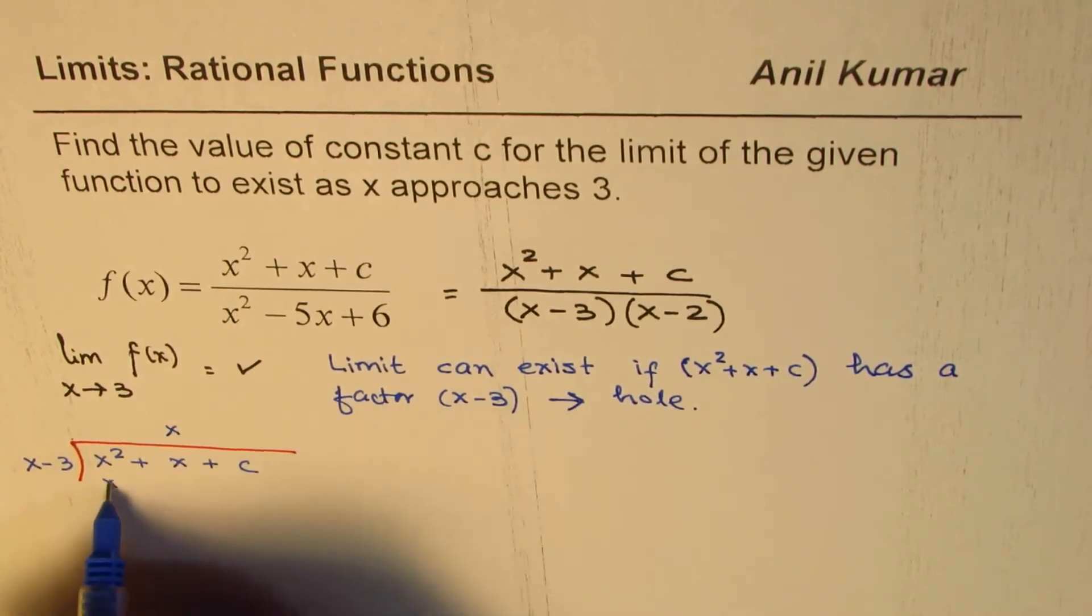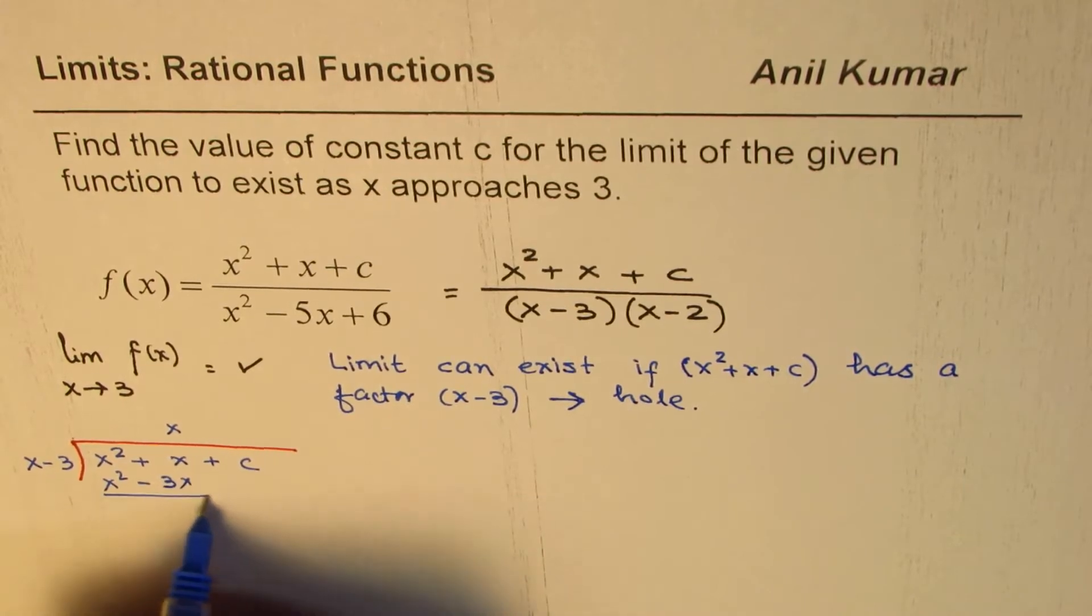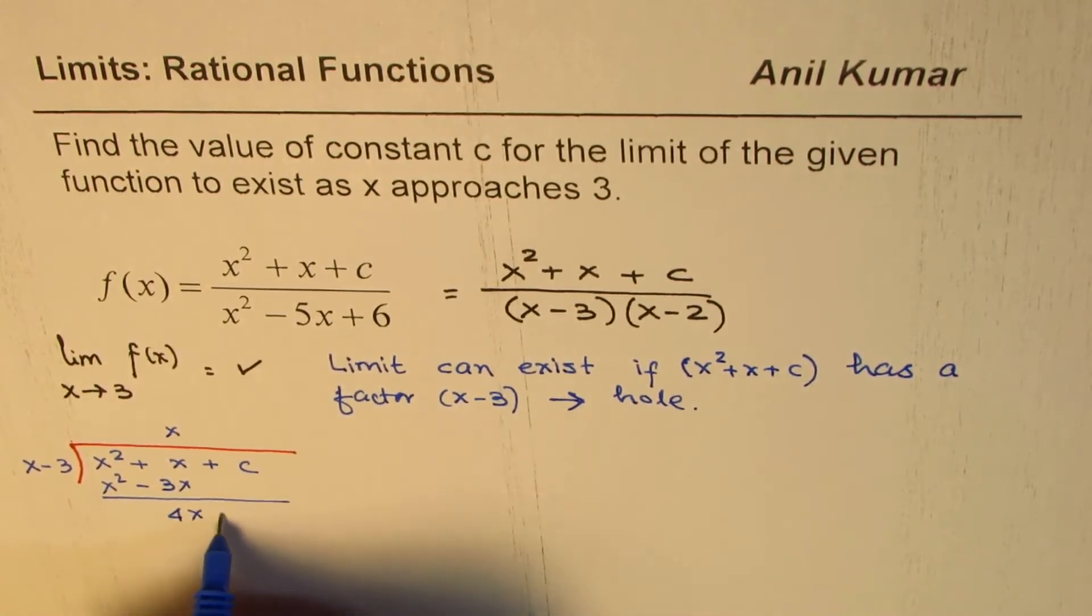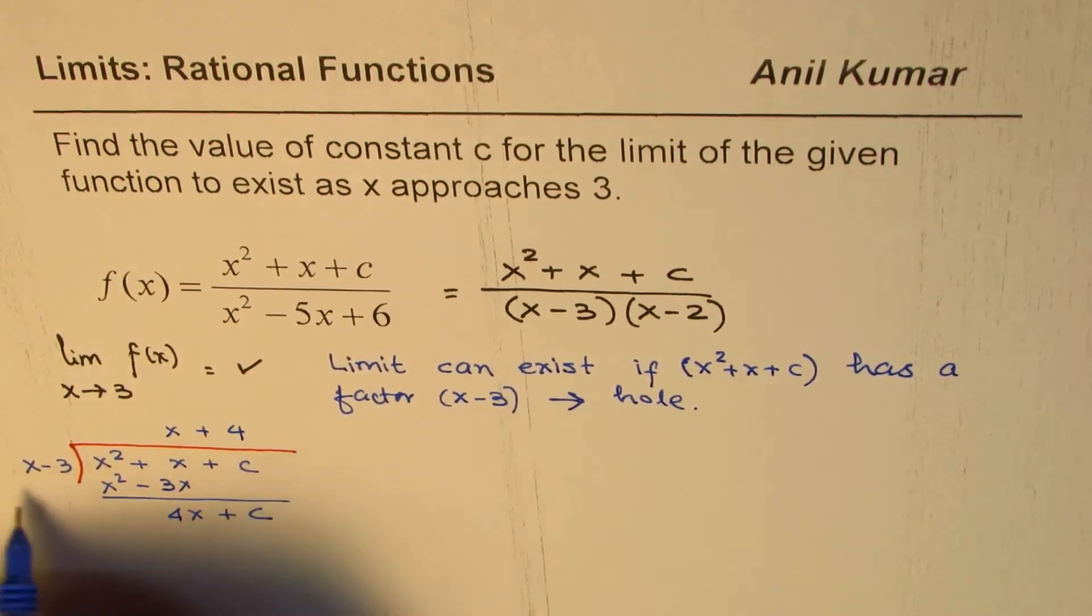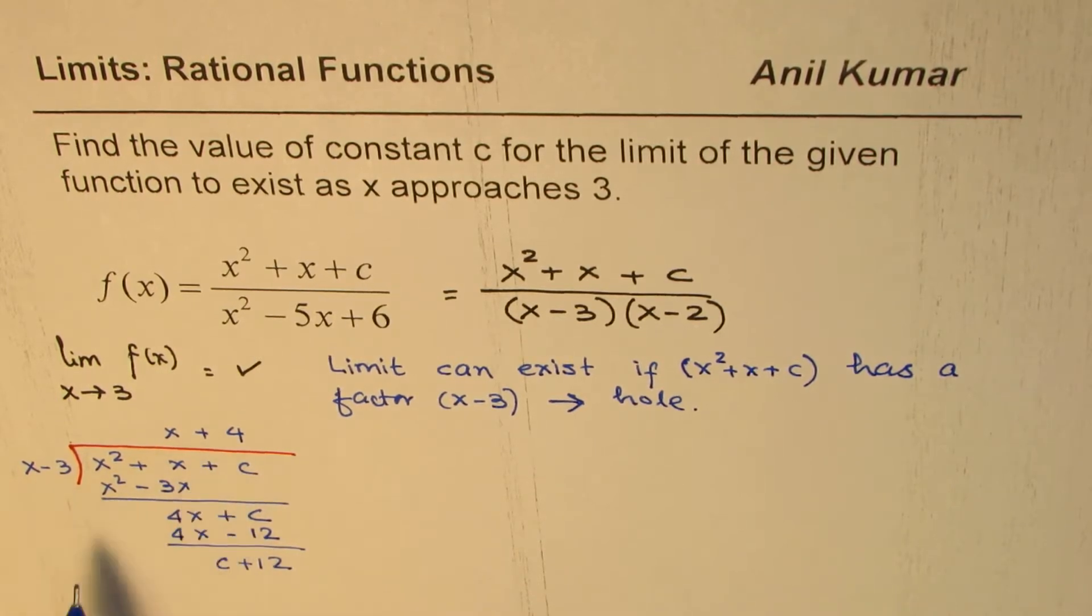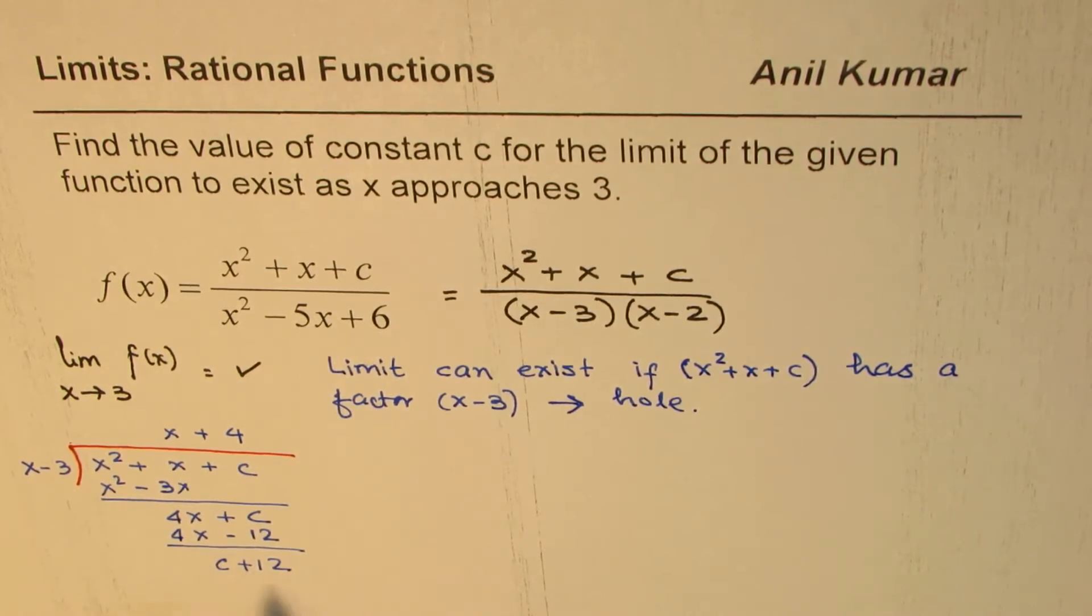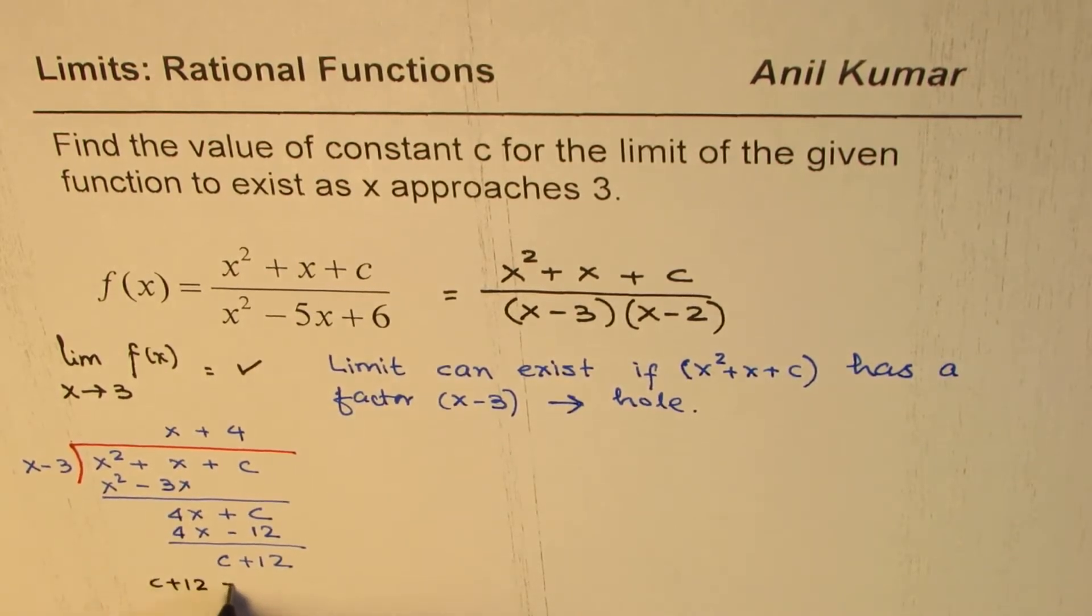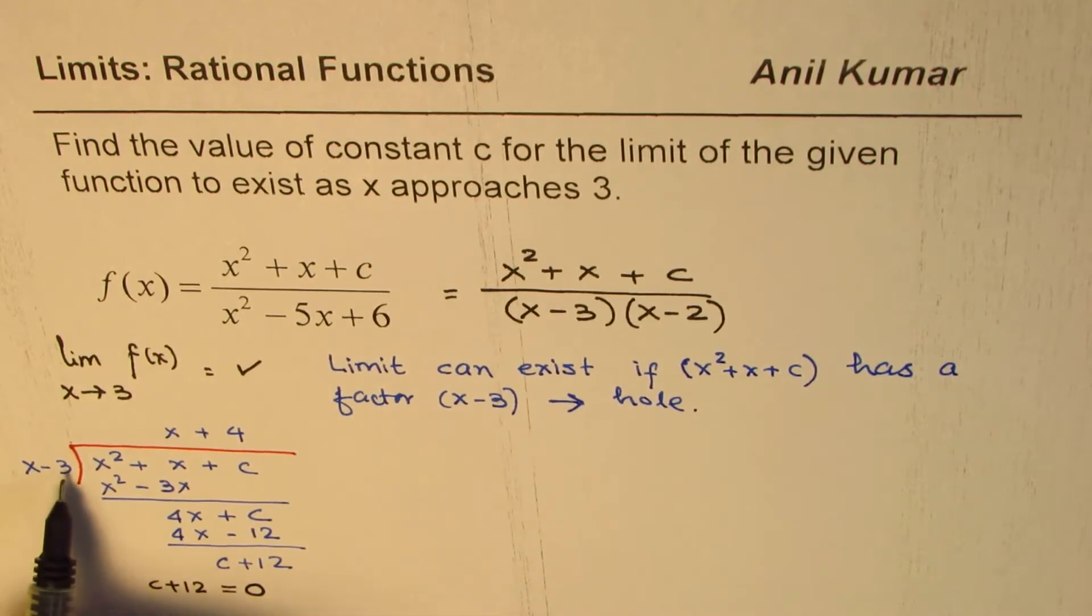So it could go x times. We have x squared minus 3x. When you take away, you get 4x plus c. Now you have to do it four times. So 4x, 4 times minus 3 is minus 12. And when you take away, you get c plus 12. Now, for x minus 3 to be a factor, one of the factors is x plus 4. So this remainder should be equal to 0. So c plus 12 should be equal to 0 for x minus 3 to be a factor.